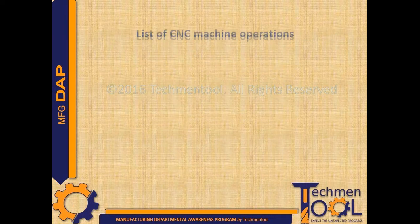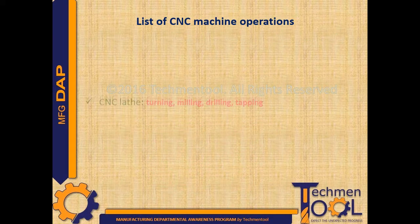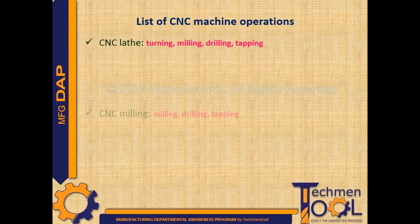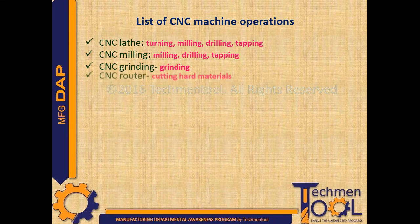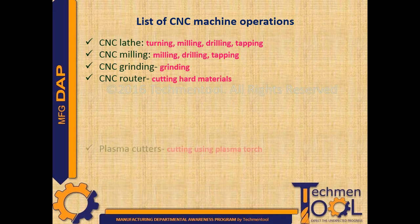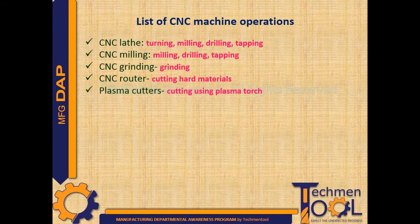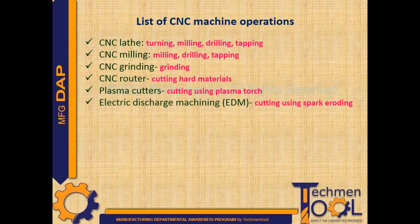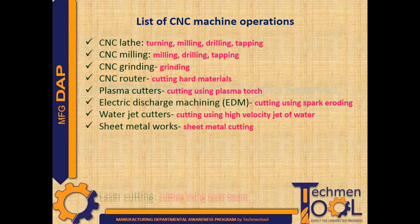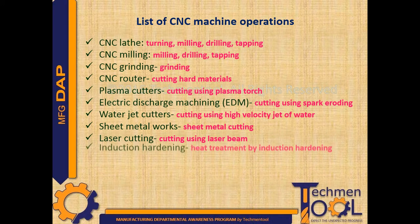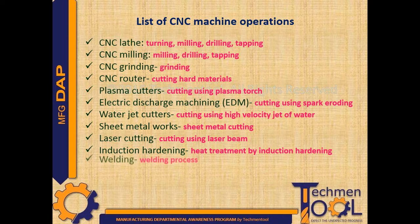Let us look into the list of CNC machine operations. CNC lathe does turning, milling, drilling, and tapping operations. CNC milling does milling, drilling, and tapping operations. CNC grinding does grinding operations. CNC router is used for cutting hard materials. Plasma cutters use a plasma torch. Electric discharge machining (EDM) uses spark eroding. Water jet cutters use a high velocity jet of water. Sheet metal works include sheet metal cutting. Laser cutting uses a laser beam. Induction hardening is a heat treatment process. Welding involves a welding process.